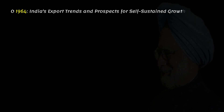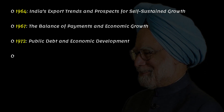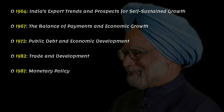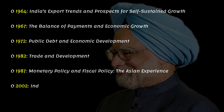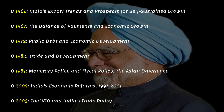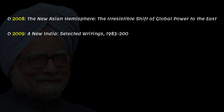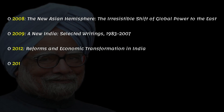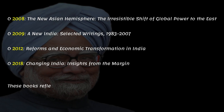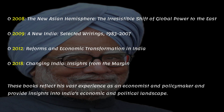His books include: 'India's Export Trends and Prospects for Self-Sustaining Growth' (1964); 'The Balance of Payments and Economic Growth' (1967); 'Public Debt and Economic Development' (1972); 'Trade and Development' (1982); 'Monetary Policy and Fiscal Policy: The Asian Experience' (1987); 'India's Economic Reforms 1991–2001' (2002); 'The WTO and India's Trade Policy' (2003); 'The New Asian Hemisphere: The Irresistible Shift of Global Power to the East' (2008); 'A New India: Selected Writings 1983–2007' (2009); 'Reforms and Economic Transformation in India' (2012); and 'Changing India: Insights from the Margin' (2018). These books reflect his vast experience as an economist and policymaker and provide insights into India's economic and political landscape.